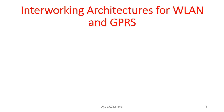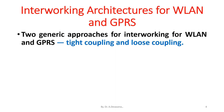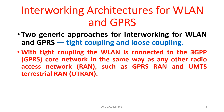Two working architectures for WLAN and GPRS: two generic approaches for interworking for WLAN and GPRS are tight coupling and loose coupling. With tight coupling, the WLAN is connected to the 3GPP — that is, the GPRS core network — in the same way as any other radio access network, such as GPRS RAN and UMTS Terrestrial Radio Access Network, that is UTRAN.